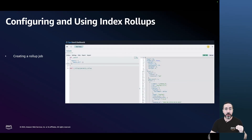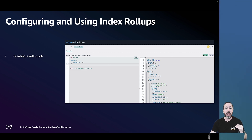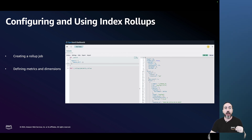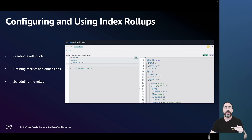Now let's see how to configure and use index rollups in your OpenSearch environment. The first step is to create a rollup job, which involves defining the metrics and dimensions you want to capture, as well as the source data and rollup schedule. When defining the metrics and dimensions, you need to think of the ones that are important for your use case. For example, you might want to track the number of documents per day grouped by product type. You also need to set up a schedule for when the rollup process should run, such as daily at midnight. To better understand this process, let's go through a practical demonstration on how to set up and use index rollups.